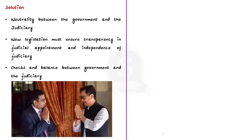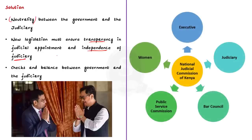In addition, the government has been delaying acting on recommendations made by the collegium and ignoring reiterated names even after multiple reconsiderations. The editorial says that asking for reform in the collegium system is valid and there is no denying the collegium system has flaws. But launching a campaign against the Supreme Court and trying to discredit the institution as a whole is not the right way to go. The key word here is neutrality — there must be neutrality between the government and the judiciary regarding appointments to the higher judiciary. The government must introduce new legislation that brings transparency in judicial appointments while ensuring independence of the judiciary. We can look at the National Judicial Commission of Kenya for inspiration — an 11-member body with representation from all stakeholders including executive, judiciary, bar council, public service commission and women members.